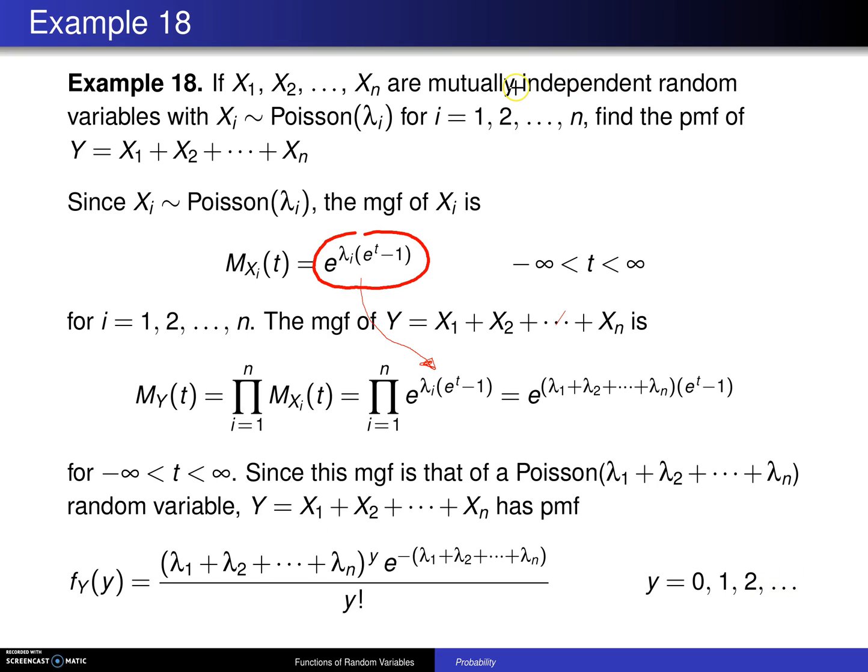To solve this by any of the other techniques, the CDF technique or the transformation technique would be much more painful than this solution. So this is the go-to solution technique for finding the function of a sum of independent random variables.